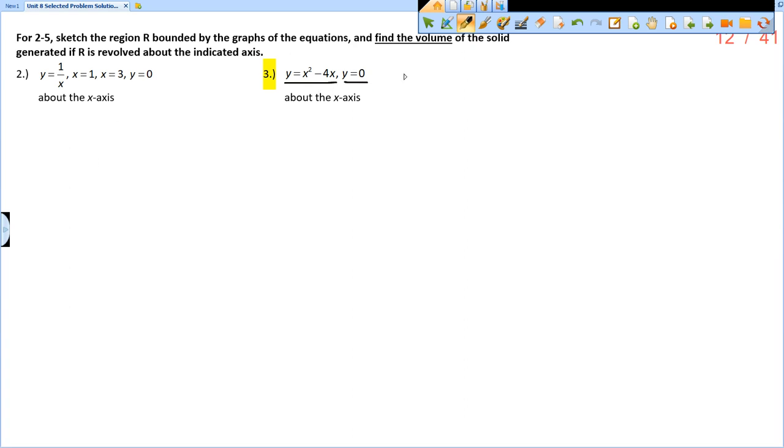So I have y equals x squared minus 4x and y equals zero. First of all, y equals x squared minus 4x, what does that look like? Well, it is a parabola facing upwards. But if I set x squared minus 4x equal to zero and I factor out an x, I get x times x minus 4. And so that means x equals zero and x equals 4 are the zeros.